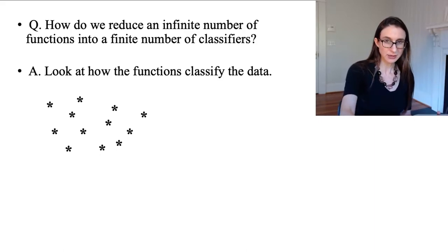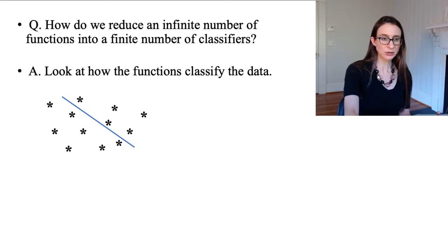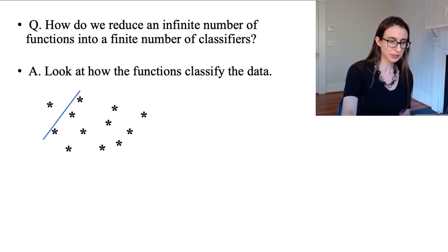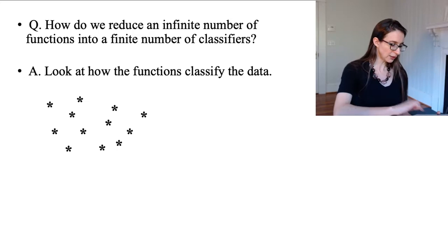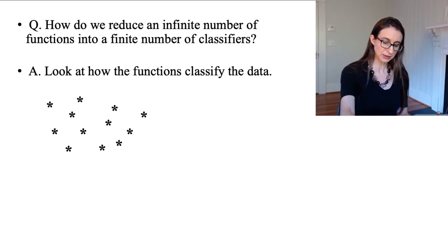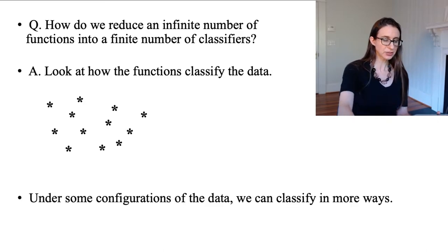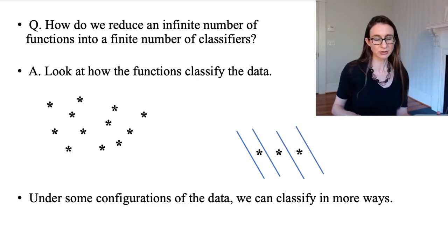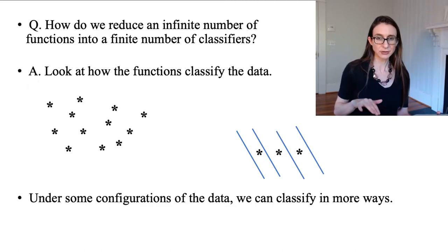The way the data are distributed in the space really matters, because under some configurations of the data we can classify it in more ways. For example, if I have three points and make them collinear, I can classify them in a few different ways, but there are some ways I can never classify them — like making the first and third point positive and the second point negative. That's impossible when they're collinear.